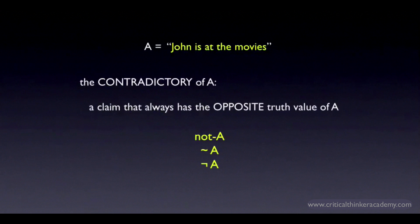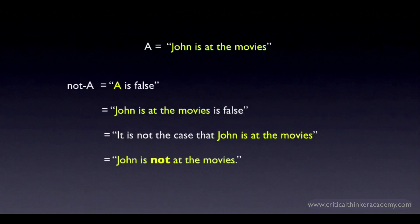What does the contradictory assert? It asserts that the claim A is false. There are a couple of ways of saying this. You can read the contradictory of A as 'A is false', or 'John's at the movies is false', or 'it is not the case that John is at the movies'. But the most natural formulation is obviously: John is not at the movies.